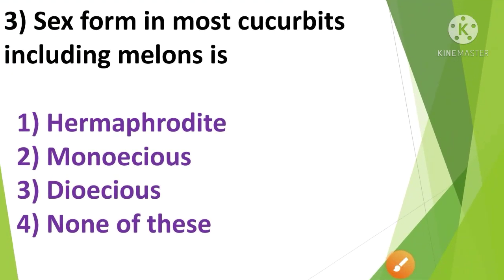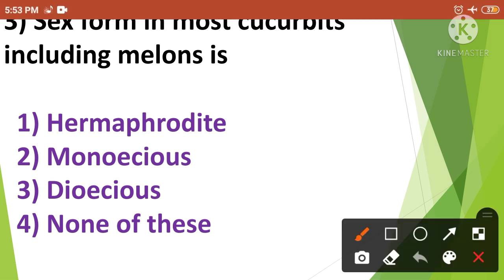Next question: Sex form in most cucurbits including melons is — 1st option hermaphrodite, 2nd option monoecious, 3rd option dioecious, and 4th option none of these. The correct answer is option 2nd, monoecious. The sex form in most cucurbits including melons is monoecious.